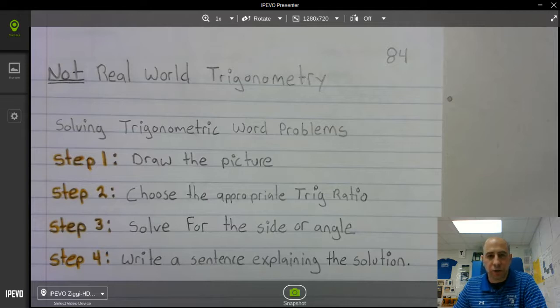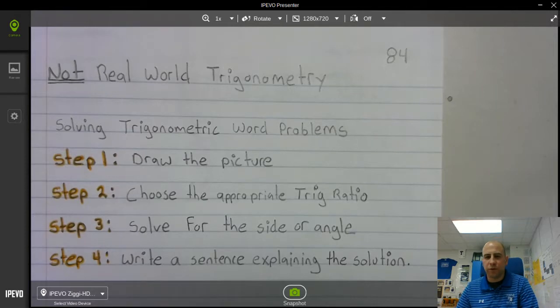Step one draw the picture. Step two choose the appropriate trig ratio. Step three solve for the side of the angle. Step four write a sentence explaining the solution. So if you would update your notes.